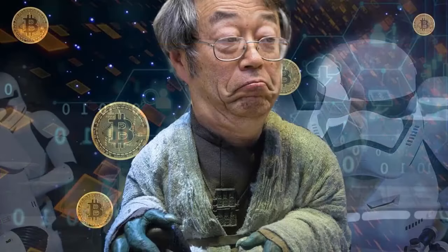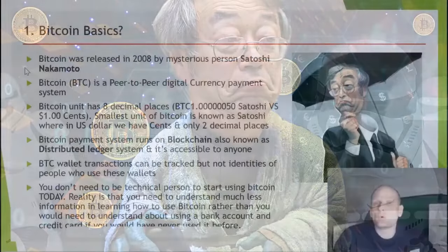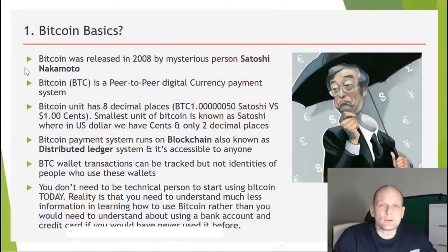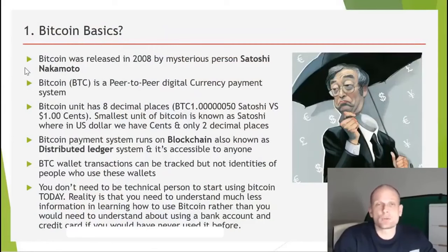Bitcoin was released back in 2008 by the mysterious person Satoshi Nakamoto, who created Bitcoin. However, the first transaction on Bitcoin blockchain technology was done only in 2009.